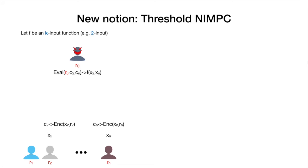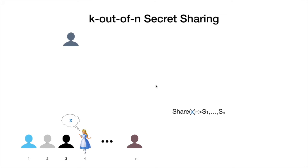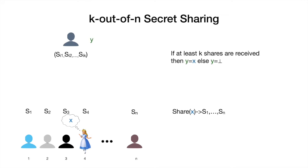The first thing we will do is show how to construct a scheme that satisfies this notion. Our construction is based on a standard non-interactive MPC protocol and a new notion of secret sharing that we call positional secret sharing. We construct this tool by relying on standard k-out-of-n secret sharing. We have a special party Alice who has a secret X. Alice runs a sharing algorithm obtaining n shares, distributes those among the n parties, and the evaluator can reconstruct the secret only if he gets k or more shares. If he receives fewer than k shares, nothing is revealed about Alice's input.